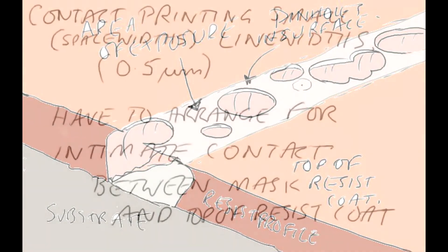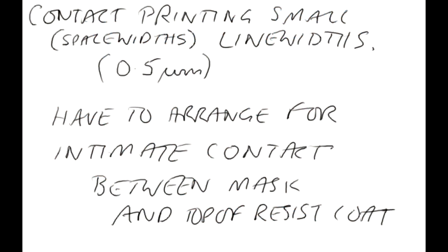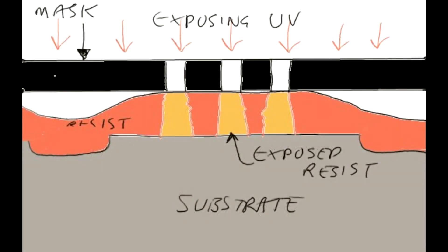I was contact printing small space widths, line widths. So I was printing in positive tone resist. I was printing windows which were 0.5 microns in width. And you have to, if you're going to do that, you have to arrange for intimate contact between the mask and the top of the resist. And I'm talking about the MA-56 with 405 or 365 line exposure.